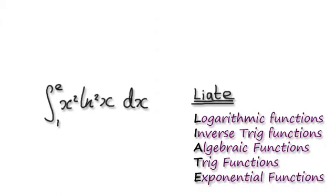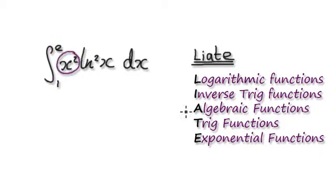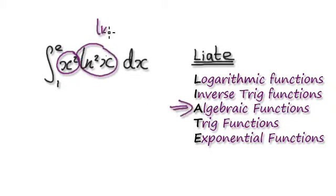Let's give you some practice. Integrate this — it's a definite integral from 1 to e. You've got an algebraic function, and this expression here is the same as (ln x)², just written differently, so these two are the same.